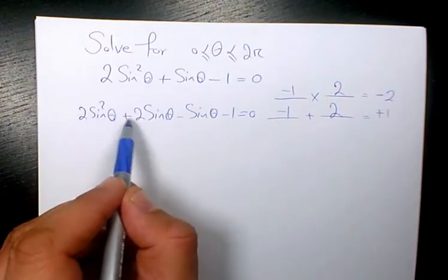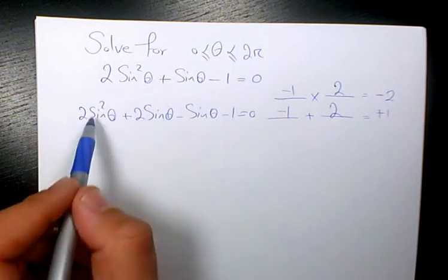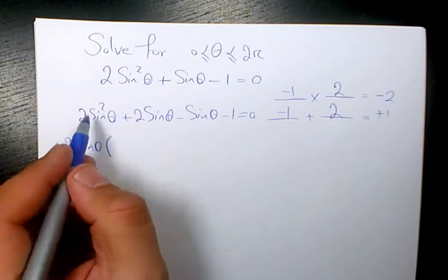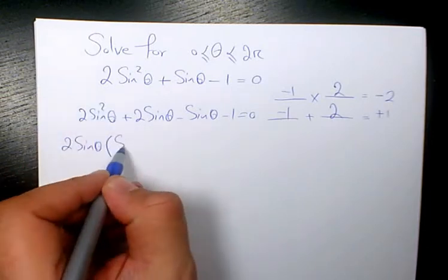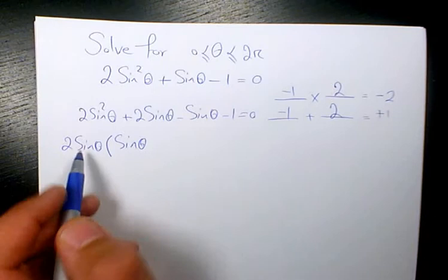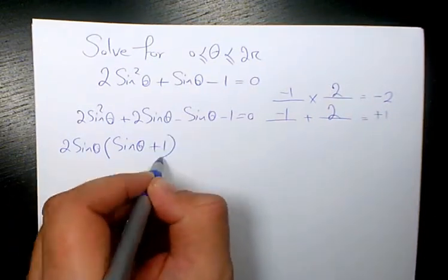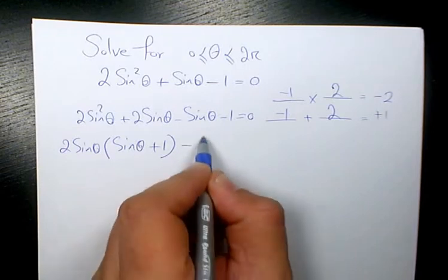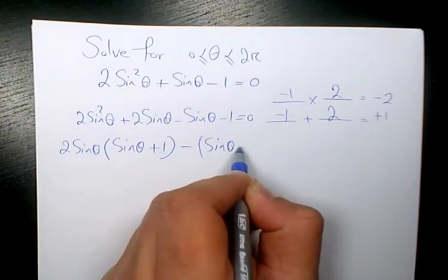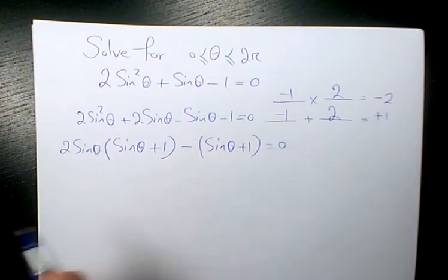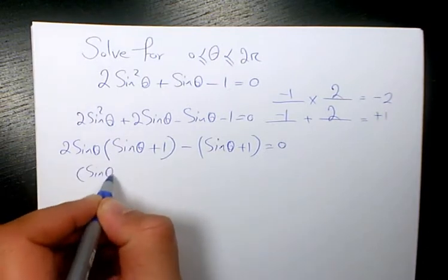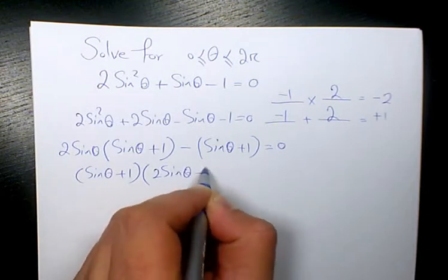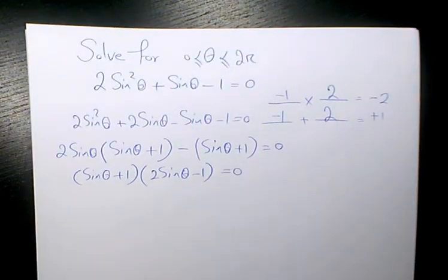So we have 2 sine squared theta plus 2 sine theta. The GCF here is 2 sine theta. That will be 2 sine squared divided by 2 sine is going to be sine theta. 2 sine divided by 2 sine is going to be plus 1. Here you have negative sine theta minus 1. You have negative sine theta plus 1 equals to 0. Then I factor that. It's going to be sine theta plus 1. Here I have 2 sine theta minus 1 equals to 0.